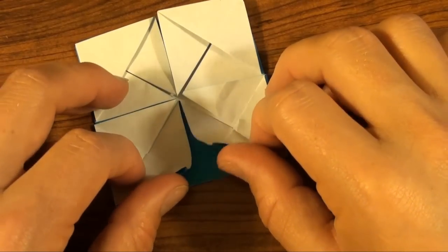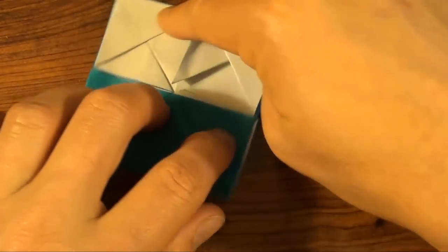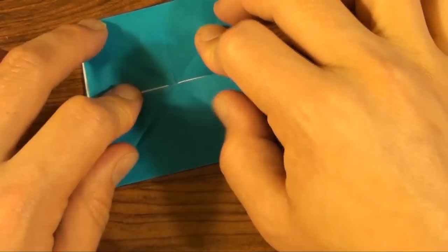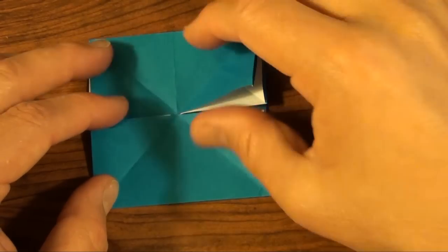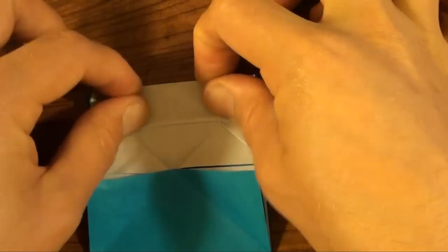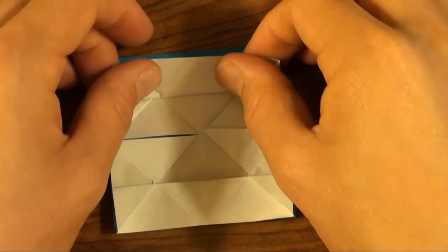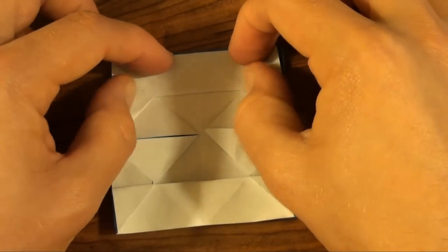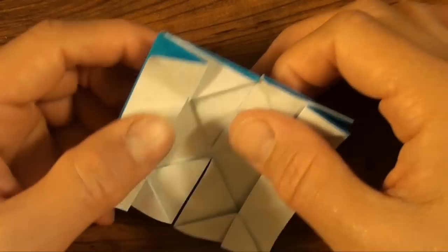Now fold two corners up like this. And do the same thing on the other side. We're going to take this raw edge and fold it up to here. Rotate. And fold this raw edge up.